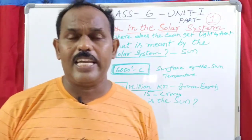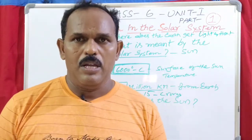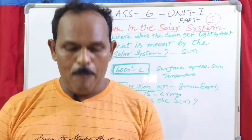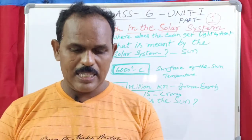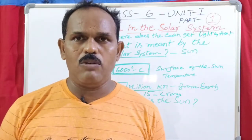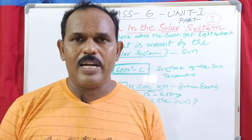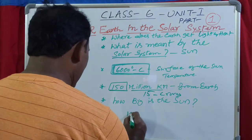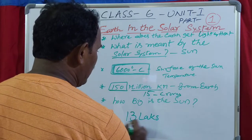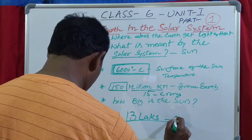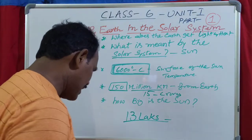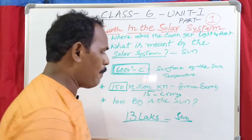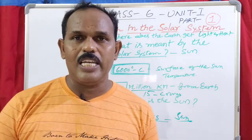How big is the sun? The sun is very big. About 1.3 million Earths can fit inside the sun.